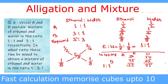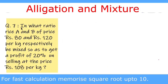Mixing equal parts (100 ml each) of vessel A and vessel B: total ethanol = 50 + 75 = 125 ml, total water = 50 + 25 = 75 ml. So ethanol to water = 125:75. Dividing by 25, we get 5:3, which is exactly the required ratio. This verifies our answer. We go to the next question.